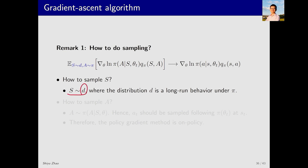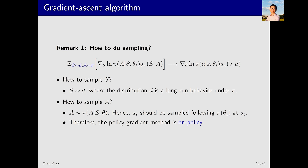For s, its distribution follows d or eta — the long-term distribution of s after running the policy for a while. In practice, since samples are precious, we use them without strictly considering the distribution. For a, it should follow policy pi, so for a given state s, we sample action a based on the current policy pi.